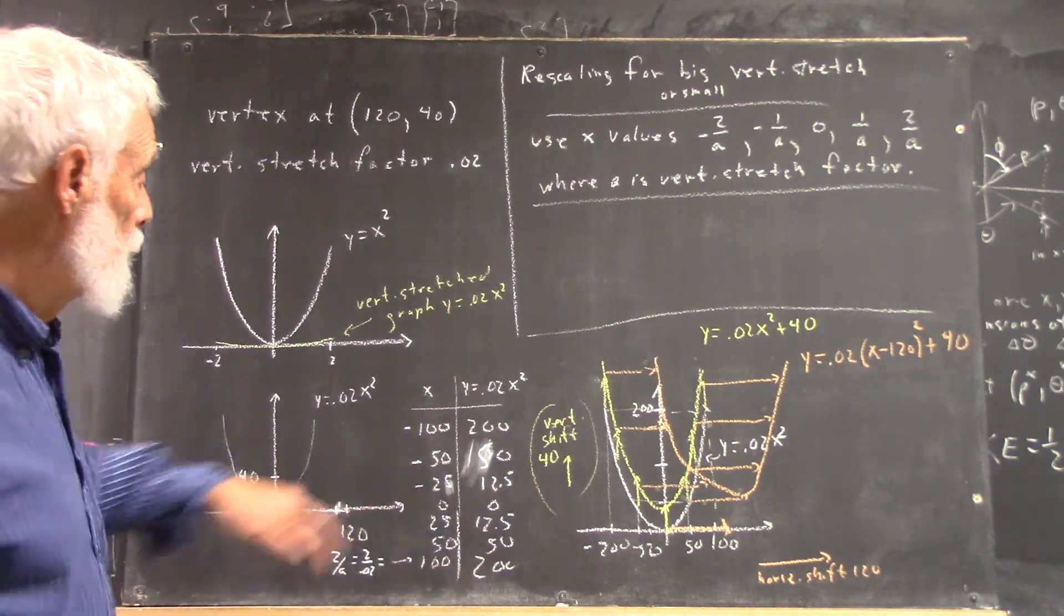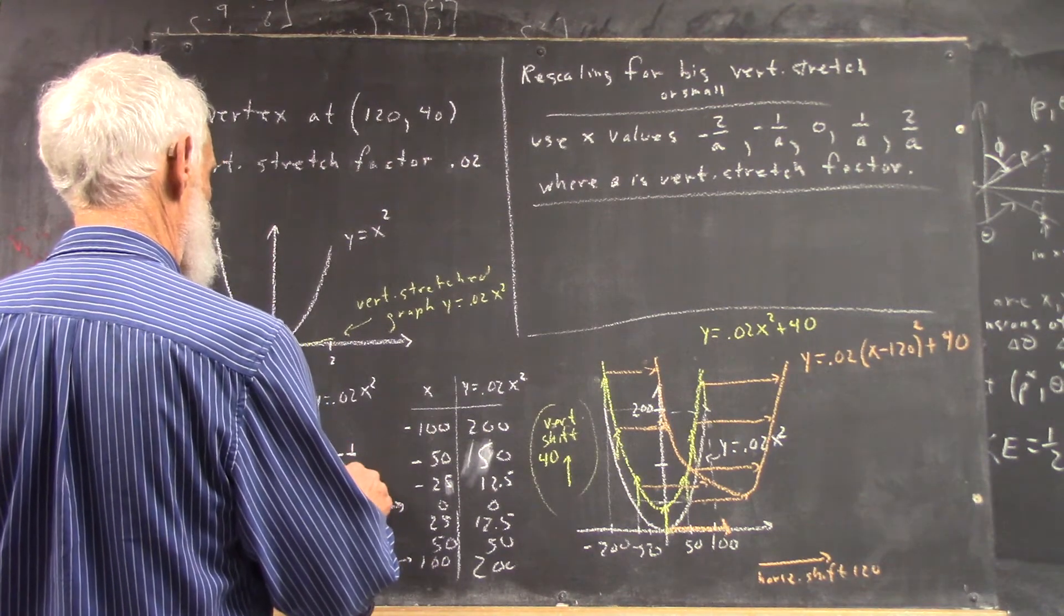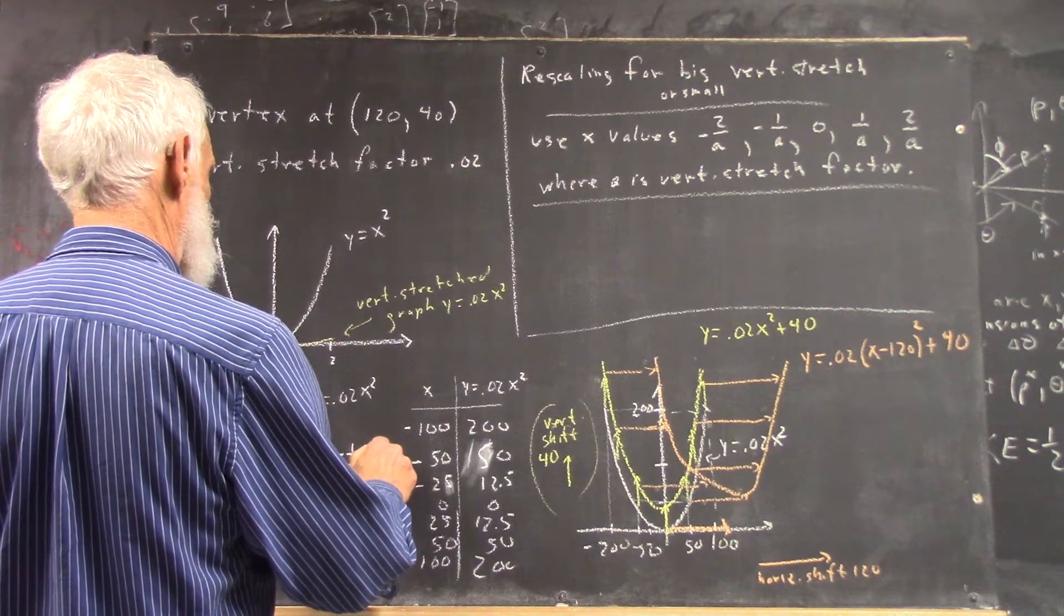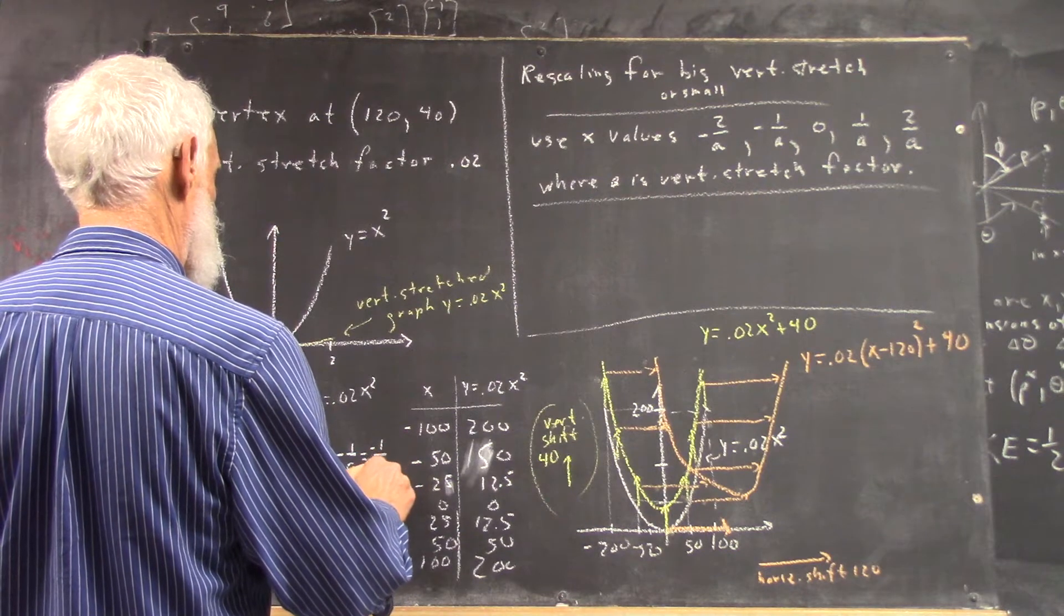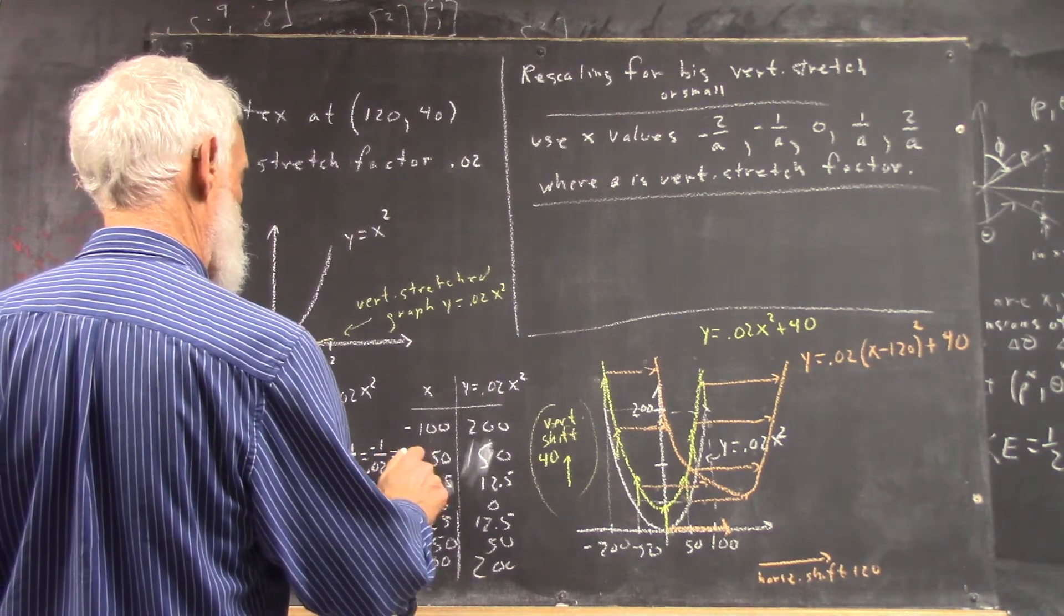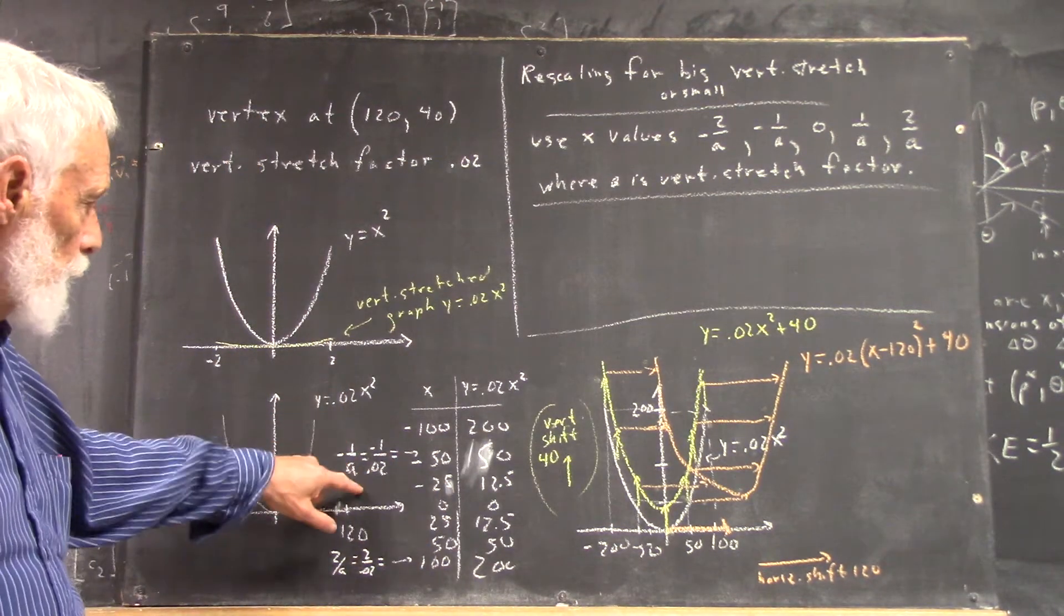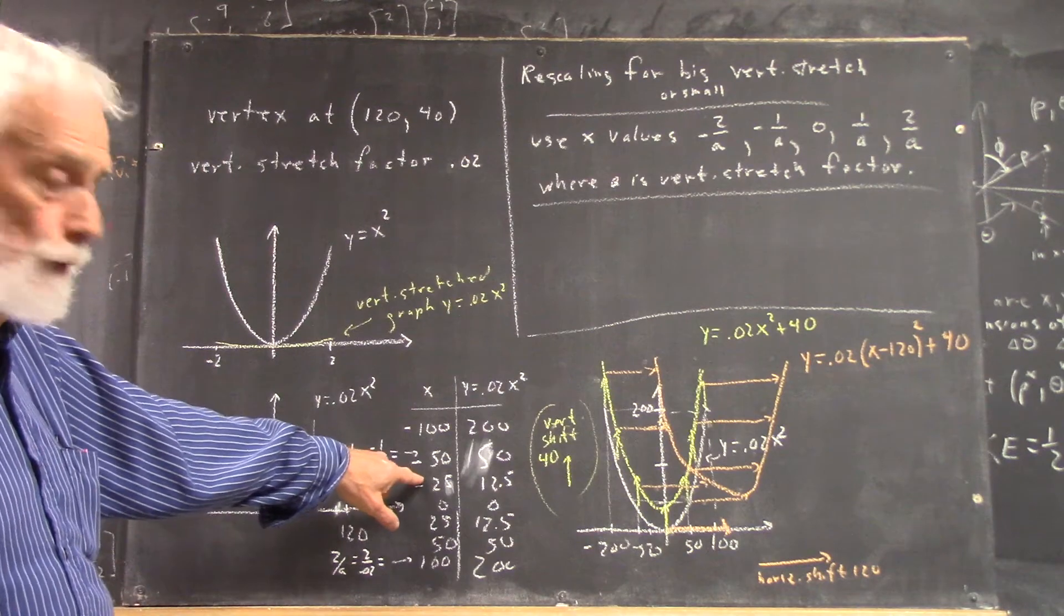And here, that would be like your negative 1 over a is negative 1 over 0.02 is negative 50.